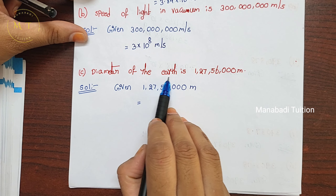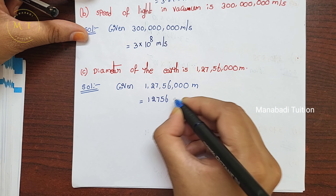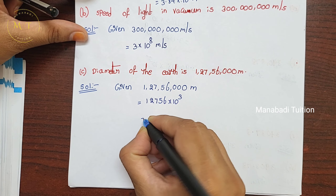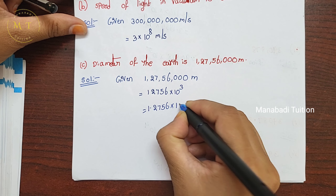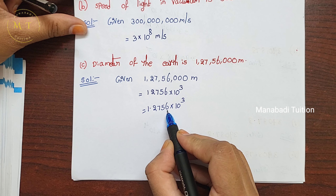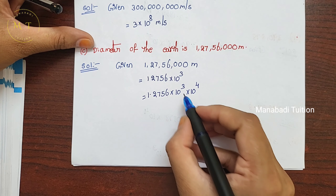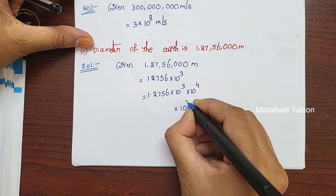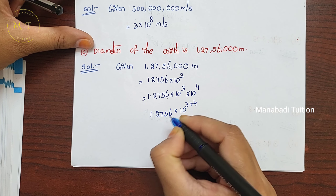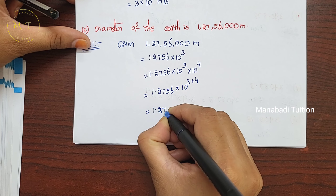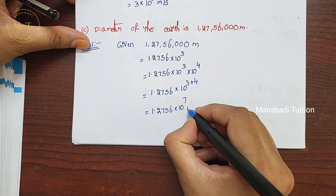Part C — diameter of the Earth. The given number has digits 1, 2, 7, 5, 6. There are 3 zeros, so write 10 power 3. After placing the point after 1 digit, check how many digits are before the point: 1, 2, 3, 4 — so multiply by 10 power 4. Same base, add exponents: 3 plus 4 gives 7. The number before was 1.2756, so the answer is 1.2756 into 10 power 7 m.